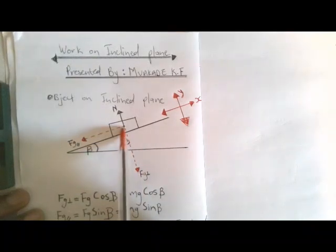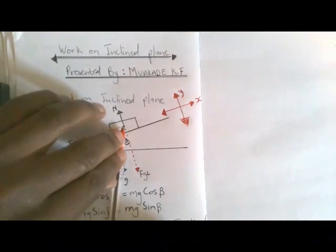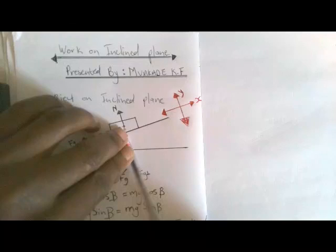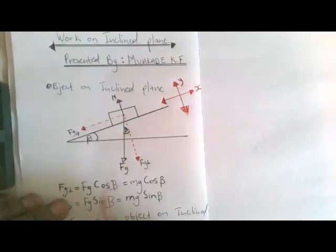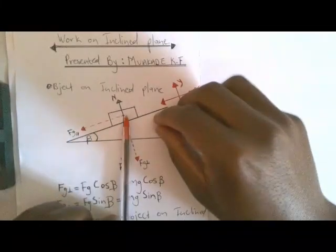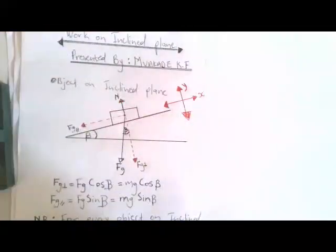If you place your pen on FG and it crosses at an angle going to FG perpendicular, we say FG perpendicular equals FG cos beta. If it doesn't cross any angle — as in the case of FG parallel — then FG parallel equals FG sine beta. Since FG equals mg, we have FG parallel equals mg sine beta.